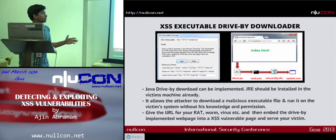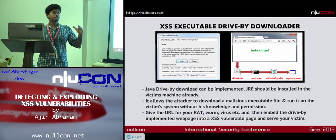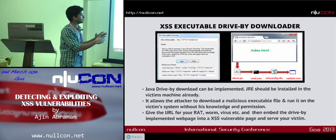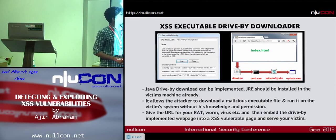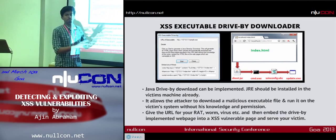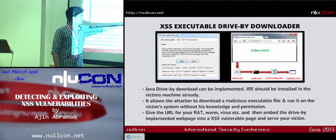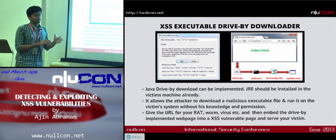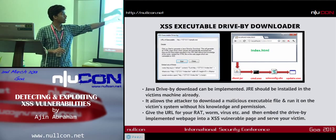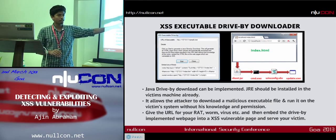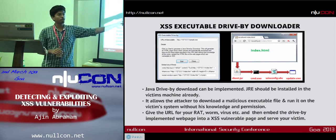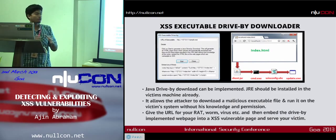Another feature of the exploitation framework is the drive-by downloader — it's a Java drive-by download. Internally, there is a webpage embedded with a malicious JAR file. Once the victim visits that website, the client.jar file gets executed, accesses the command, writes some code forming a winconfig.vbs file. This Visual Basic script then fetches an executable from a remote URL, downloads it to the temp directory, and executes it.